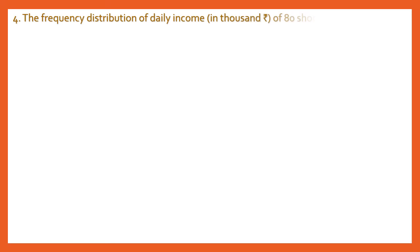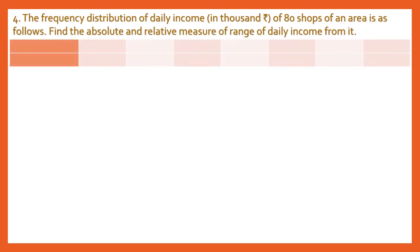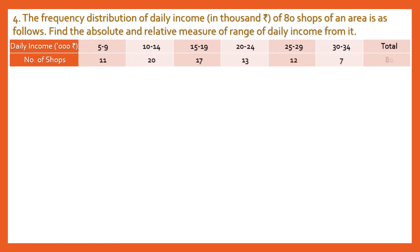Question 4: The frequency distribution of daily income in thousand rupees of 80 shops is given. We need to find the absolute and relative measures of range of daily income. The absolute measure is Range, the relative measure is the Coefficient of Range. Notice that the daily income classes here are inclusive classes.